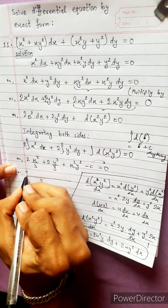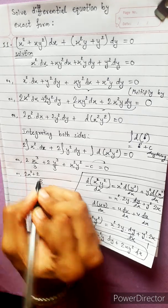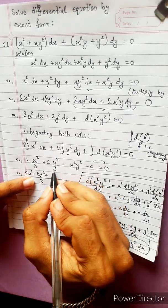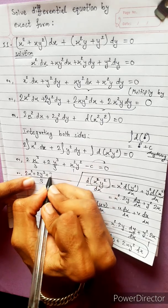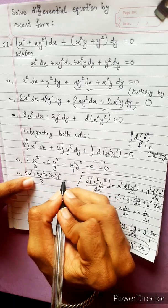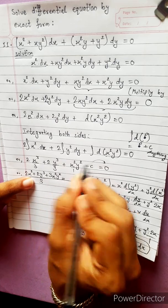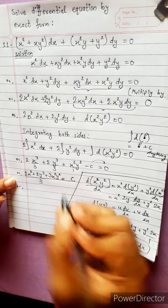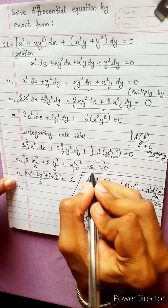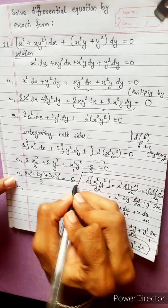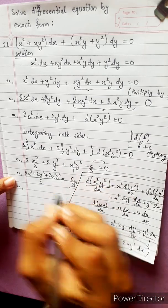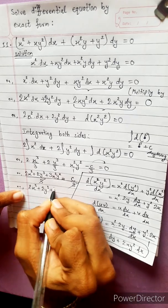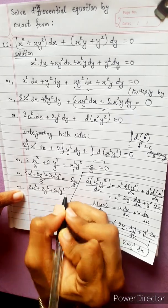x cubed, 2x cubed plus 2y cubed plus 3x squared y squared equals — this is minus c and this is plus c. This is 3, divided by 3. This will cancel. The answer is: 2x cubed plus 2y cubed plus 3x squared y squared equals c.